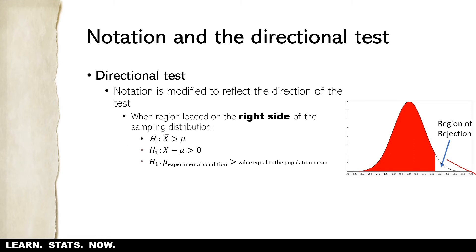If we load the region of rejection all the way to the right, the alternative hypothesis is supported if the sample mean is greater than mu. Here, mu would be at zero — the center of the sampling distribution — and the sample mean is somewhere out to the right, significantly greater than mu. We could also say the difference between them is greater than zero, or that mu of the experimental condition is greater than the population mean represented by the null hypothesis.